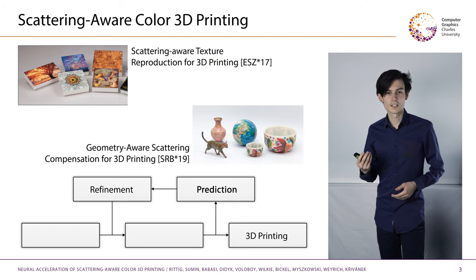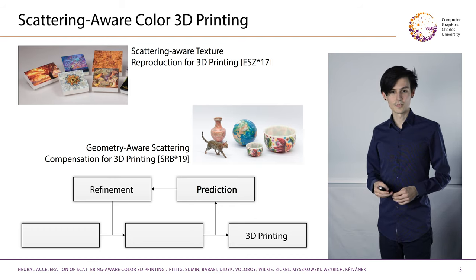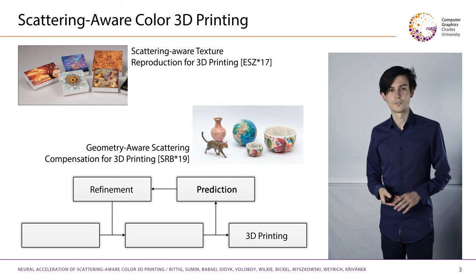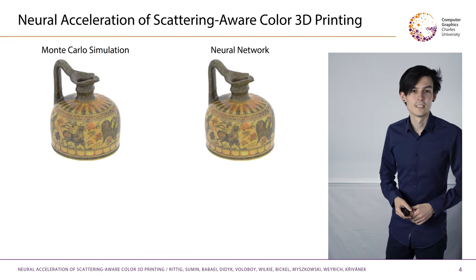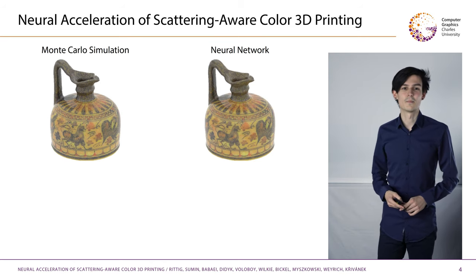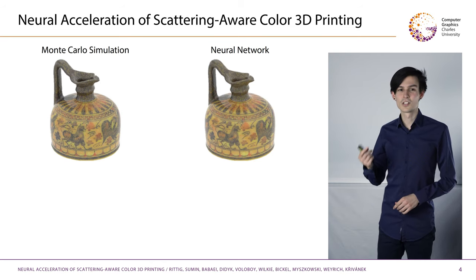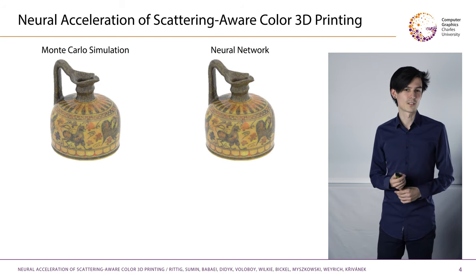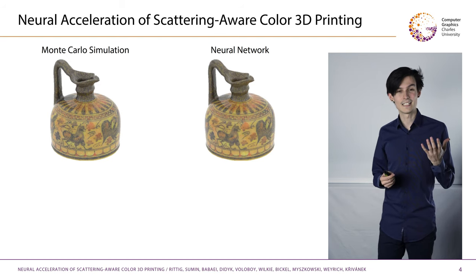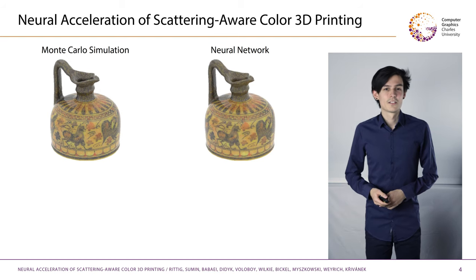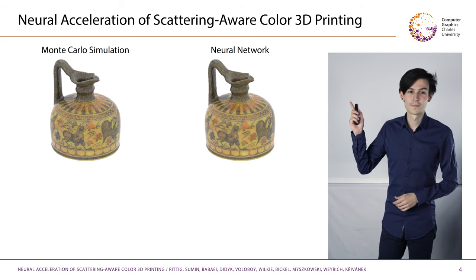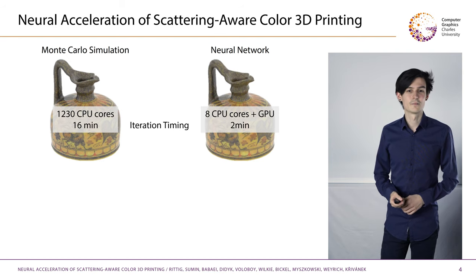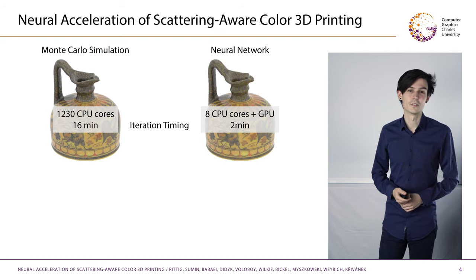For the prediction step, we used Monte Carlo light transport simulation, which was accurate but unfortunately very expensive to compute. In this work, we address this prediction step and present a method based on machine learning to replace the costly light transport simulation while maintaining its high quality. You can get 3D printouts like these, but up to two orders of magnitude faster per iteration and with considerably reduced hardware requirements.